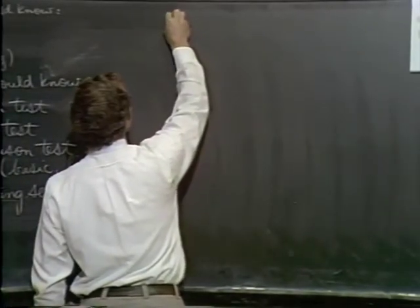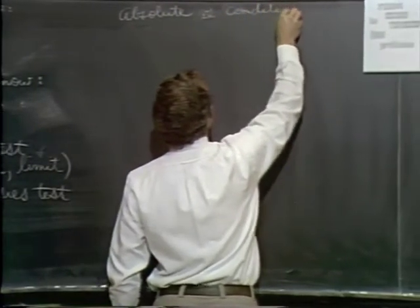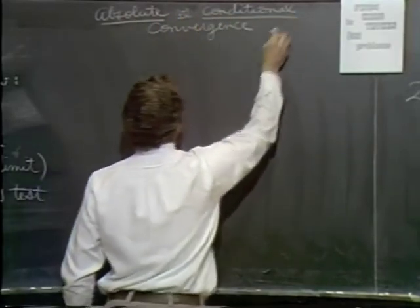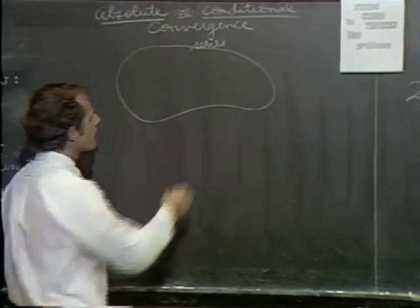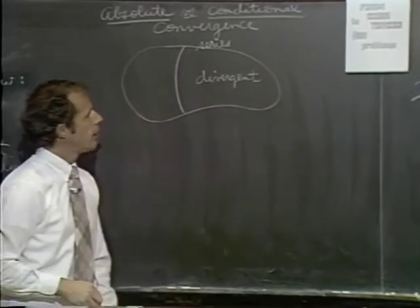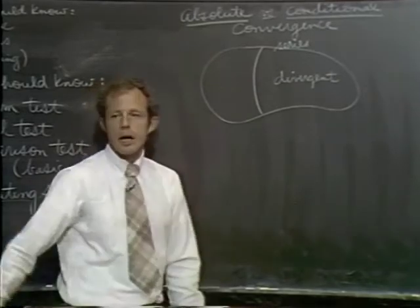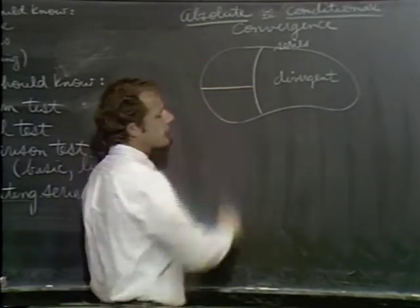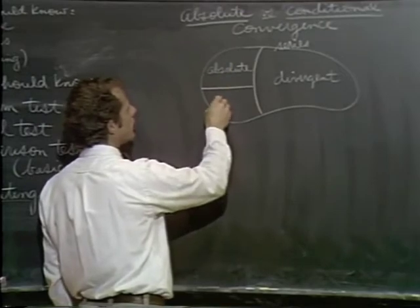What I want to do is talk about absolute versus conditional convergence. There are two kinds of convergence. If you take a series, it's going to fall into one of three cells. I think an awful lot of series are divergent. Or series are convergent, and up until now, that's all we've been interested in — divergent, convergent, black and white. As it turns out, there are two types of convergence: absolute convergence and conditional convergence.